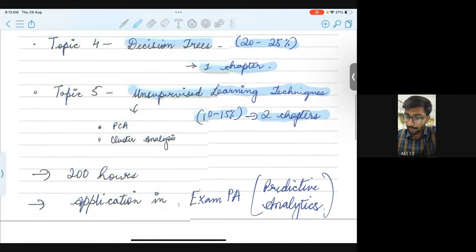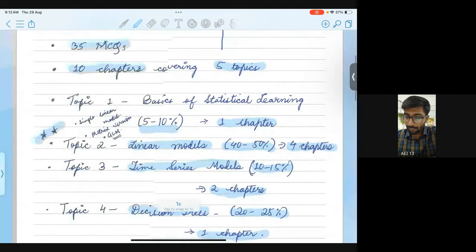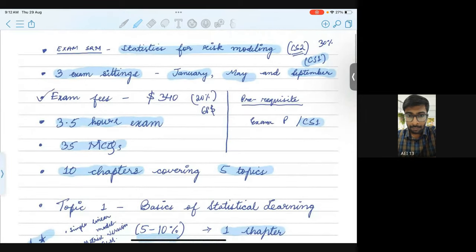I think that's all about SRM. So roughly 5 topics, 10 chapters, 35 MCQs, 3 and half hour exam. Exam fees is $340. 20% discount if you are a student member. Pre-requisite would be CS1 or exam P. You have 3 exam settings in a year.